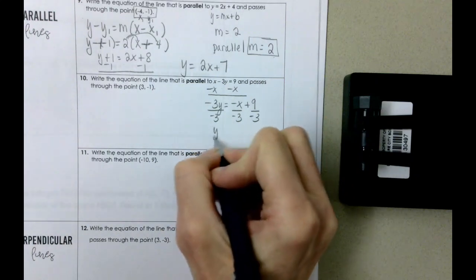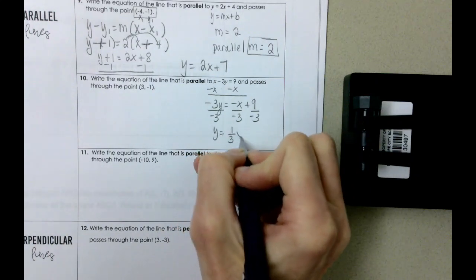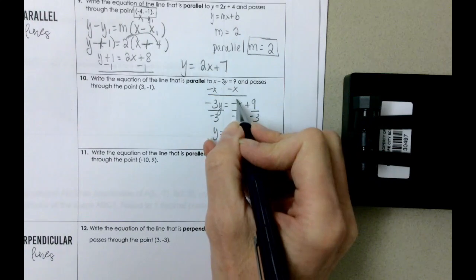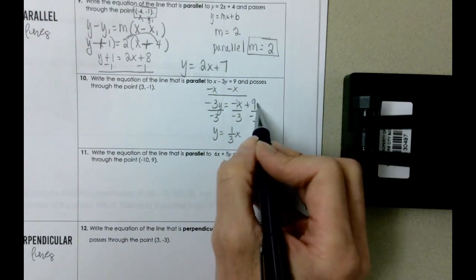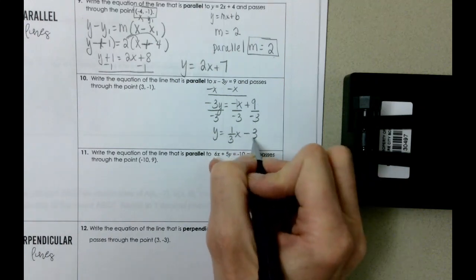We get y equals one third x. The number in front of here was a one. Negative divided by negative is positive, and then 9 divided by negative 3 is negative 3.